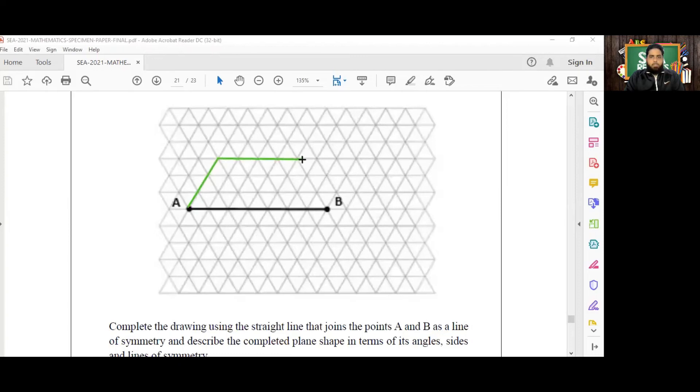We are going to use the line AB now as a line of symmetry to complete the symmetrical figure. Depending on how big you made your trapezium, you would move the appropriate number or trace the appropriate number of units out here on this triangular grid. What we have here is now a symmetrical figure, and we have to describe it in terms of its angles, sides, and lines of symmetry.